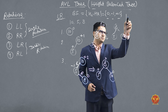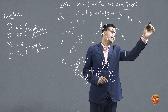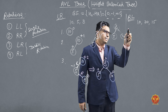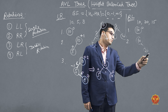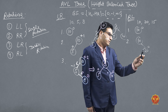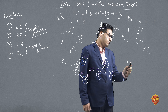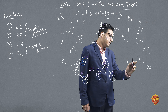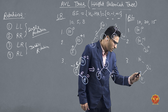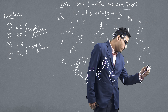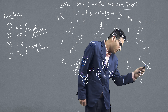Now the next one is RL rotation. RL rotation is similar. Let us take an example with elements 10, 20, and 15. First insert 10 — its balance factor is 0. Insert 20: 20 becomes the right child of 10 since 20 is greater than 10. Balance factor of 20 is 0; balance factor of 10 is 0 minus 1 equals minus 1. Now insert 15: since 15 is greater than 10 but less than 20, it becomes the left child of 20. Balance factor of 20 is plus 1; balance factor of 10 is 0 minus 2, which equals minus 2. The tree is unbalanced.